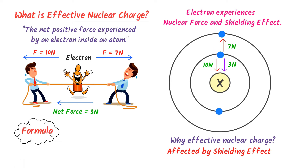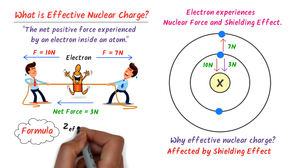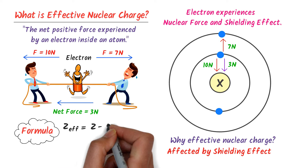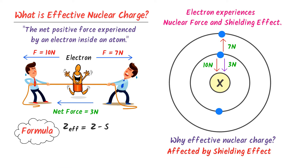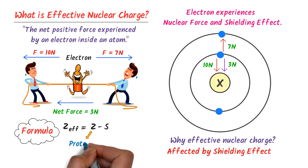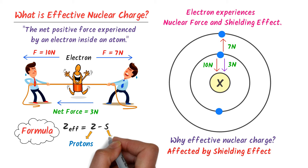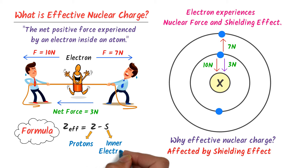The formula of effective nuclear charge is Z effective equals Z minus S, where Z stands for number of protons and S stands for number of inner electrons.